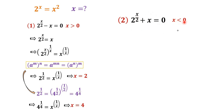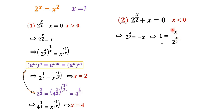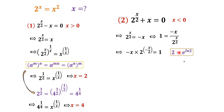Now for Case 2, where x is negative. Moving x to the right gives 2^(x/2) = −x. Dividing both sides by 2^(x/2) gives 1 = −x / 2^(x/2). Rearranging, we have (−x) · 2^(−x/2) = 1. We then replace 2 with e^(ln 2) and apply the exponent rule, giving (−x) · e^(−(ln 2 / 2)·x) = 1.